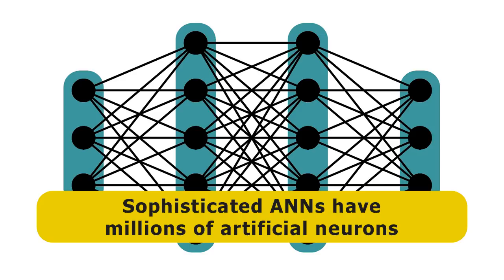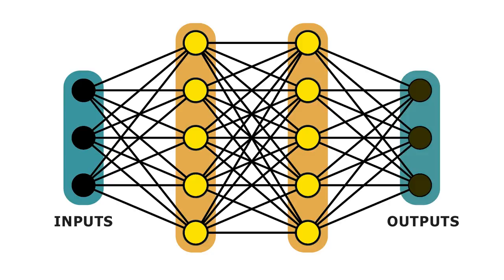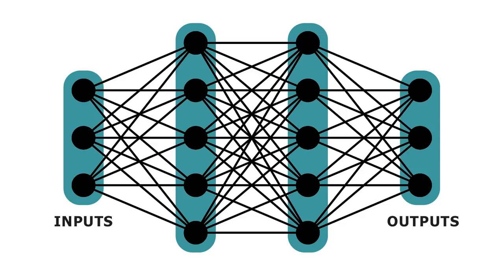Basically you've got inputs to the system — this might be data from a camera with pictures — then the network in the middle will establish patterns of connection, and that'll create an output. So you might show this system lots of pictures of a particular person, it learns how to recognise that person, and you could then trace that person in a load of video files by applying this particular neural network.